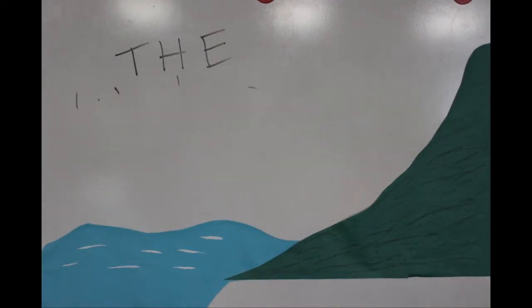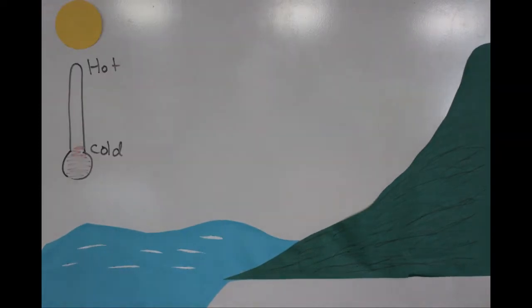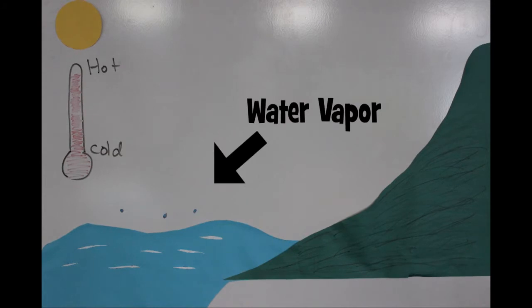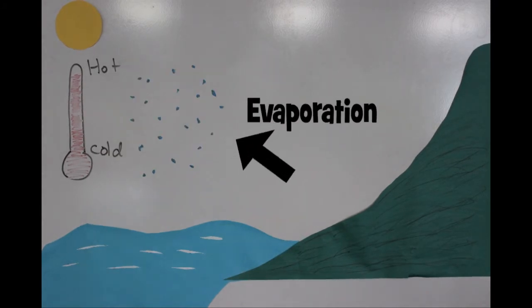Let's talk about the water cycle. The water cycle starts when the sun heats the water up. Tiny water droplets called water vapor start to rise into the air. This is called evaporation.